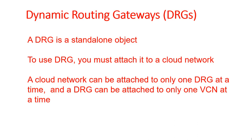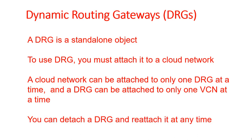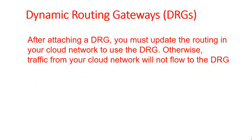Similarly, a DRG cannot be attached to multiple VCNs — it can only be attached to one VCN. It is a one-to-one relationship. You can detach a DRG and reattach it anytime because it is created as a separate entity. After attaching a DRG, you must update the routing in your cloud network to use the DRG.